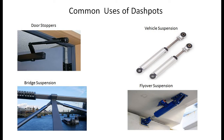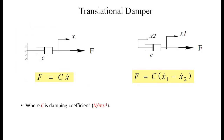Common uses of dashpots include door stoppers, bridge suspension, vehicle suspension, and flyover suspension — all examples where damping is improved to absorb shock. The mathematical formulation for a damper is F = c·ẋ, where c is the damping coefficient expressed in N·s/m (newton per meter-second inverse).